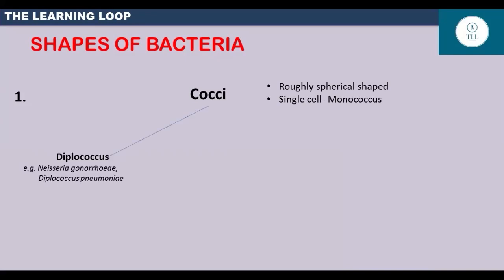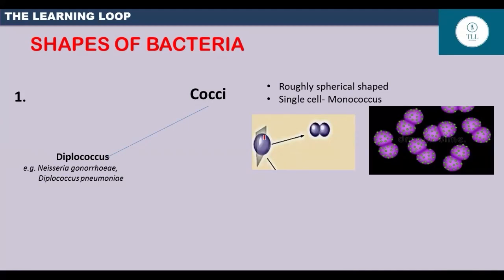First one is diplococcus. Diplococcus bacteria is formed when a single cell is divided by a single plane of division and live as a pair.